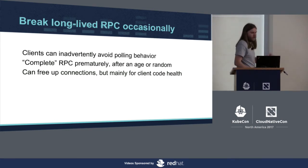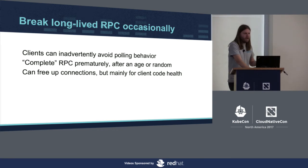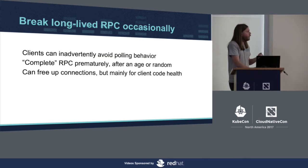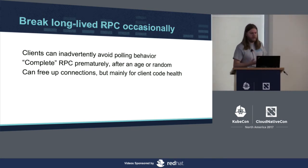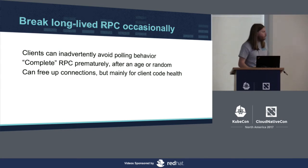The last thing: because we like streams and long-lived RPCs, I highly suggest that you break them occasionally. Clients are really good at avoiding work they don't have to do. If a client doesn't realize it needs to handle the RPC failing before it completes, it very likely will have a bug in that code path. Go ahead and sometimes purposefully complete the RPC prematurely — after a fixed age or randomly to introduce noise. Then the client will reissue the request and wait longer. This is mainly about client code health.